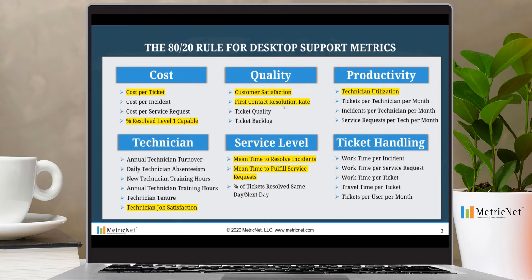FCR, by the way, applies only to incidents, not service requests. We have technician utilization, which drives our cost per ticket. We have technician job satisfaction, which has a secondary effect on just about every other metric in desktop support and field services. And then we have two important service level metrics: MTTR for incidents and mean time to fulfill service requests. Although MTTR refers to both incidents and service requests, the common vernacular for incidents is mean time to resolve, and for service requests it is mean time to fulfill.